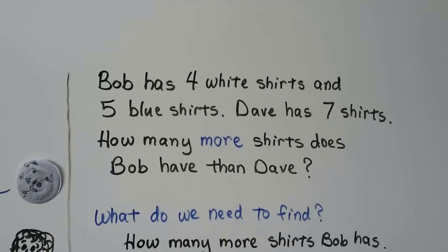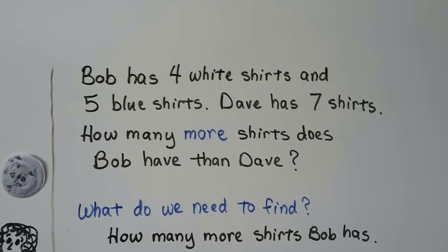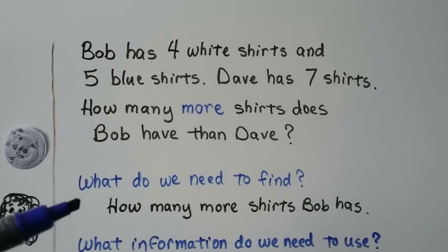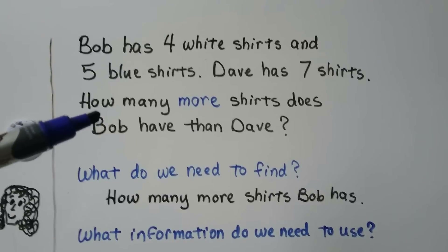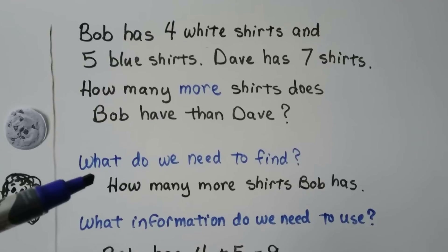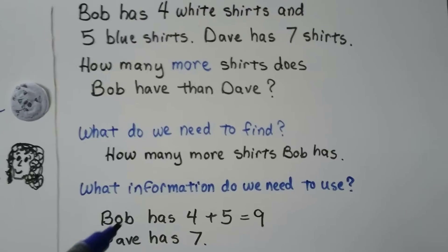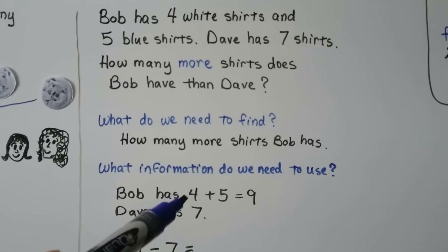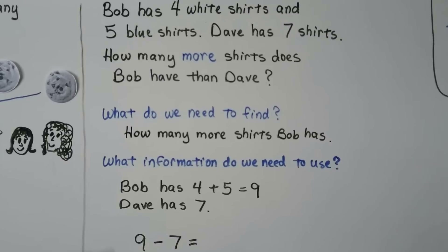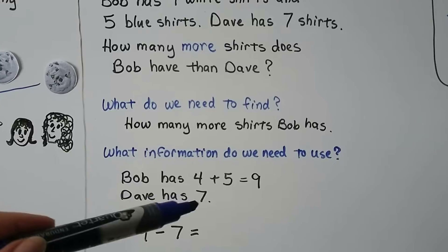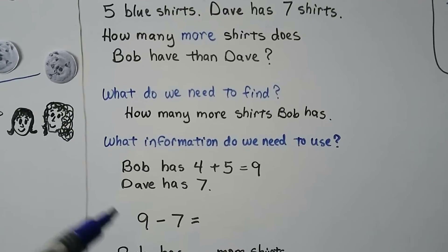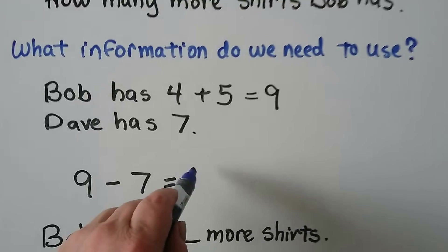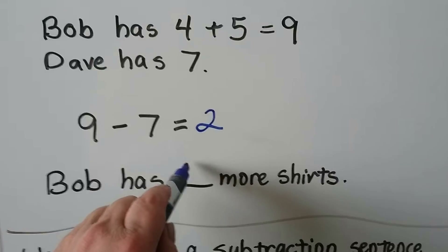Bob has four white shirts and five blue shirts. Dave has seven shirts. How many more shirts does Bob have than Dave? We need to find how many more shirts Bob has. We need to use the information that Bob has four white shirts and five blue shirts. We can add these together: four plus five is nine. Dave has seven shirts. Nine minus seven equals — do you know? Two. Bob has two more shirts.